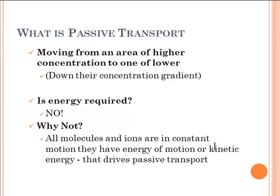Why does the cell not have to expend energy? Because of something called kinetic energy, or energy of motion. All molecules and ions are in constant motion, and because they're in constant motion, they're going to bump into each other all the time and knock each other around until they spread out equally — or reach a state of equilibrium.